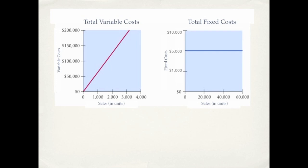Unlike our diagram on the right, our total fixed cost. Again our sales in units is on the x-axis and our fixed costs now are on the y-axis. You can see as our sales increase from 0 to 60,000 units, our fixed costs remain the same at $5,000.